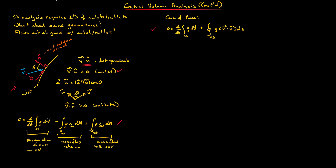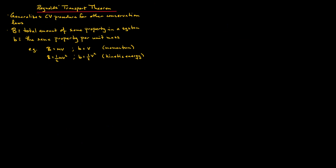This compact form was derived somewhat by example and hasn't been fully formalized. We're now going to formalize this with the introduction of what is known as the Reynolds Transport Theorem. The Reynolds Transport Theorem generalizes the control volume procedure for other conservation laws. The derivation is available in most textbooks if you're interested in where it comes from.